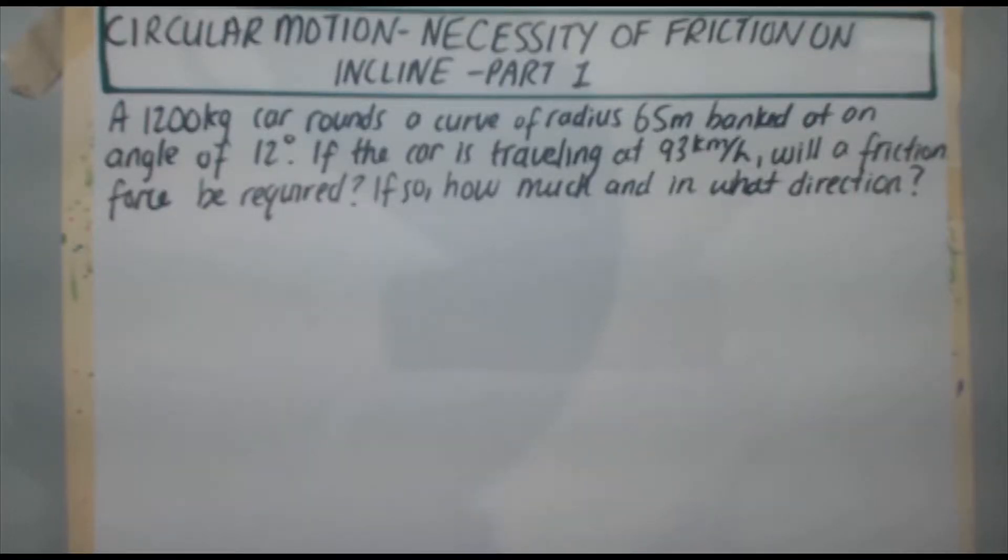Hey guys, Physics in the Flesh is back, circular motion problems. Necessity of friction on incline, part one. A 1200 kilogram car rounds a curve of radius 65 meters banked at an angle of 12 degrees. If the car is traveling at 93 kilometers per hour, will a friction force be required? If so, how much and in what direction?